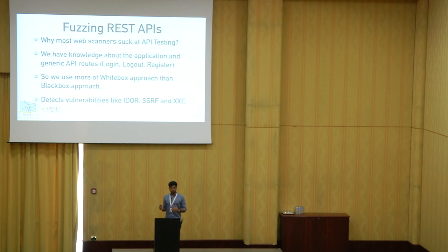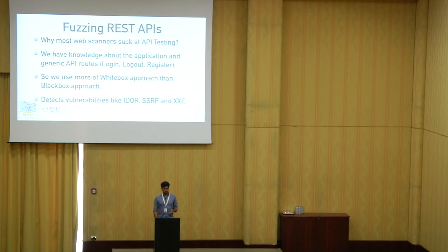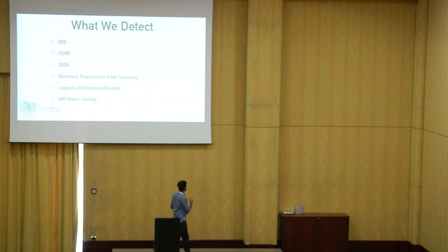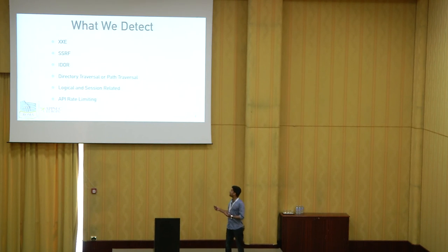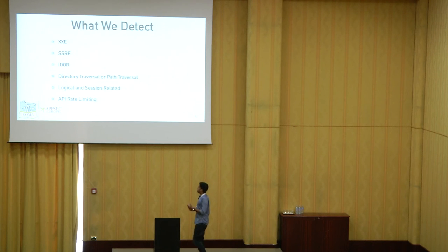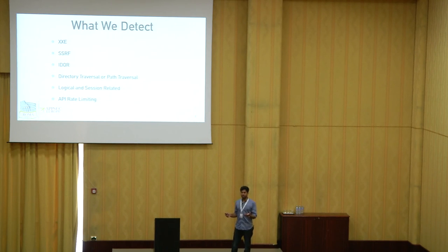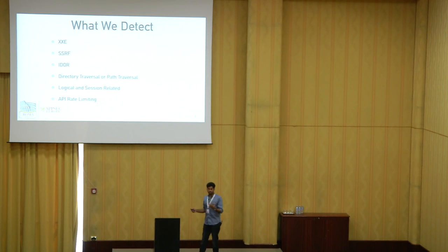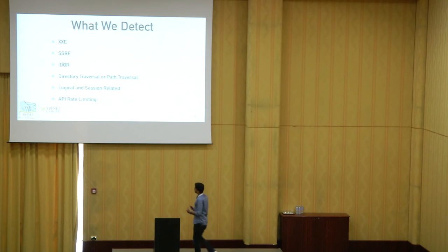We support detection of vulnerabilities like IDOR (insecure direct object reference), SSRF (server-side request forgery), and XXE, among other vulnerabilities. The full list we currently detect — which is very difficult to find with typical web scanners — includes XXE, SSRF, IDOR, directory/path traversal, and some logical and session-related vulnerabilities. It's very difficult to detect logical vulnerabilities using scanners since they don't know how the application is supposed to work. Some standard checks we can automate include API rate limiting checks.